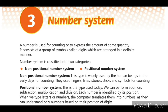In last class we studied about the number system. Today we are going to continue the remaining portions. Let us have a short recap of the topics we covered in the previous section. A number is used for counting or to express the amount of some quantity. It consists of a group of symbols called digits which are arranged in a definite manner.